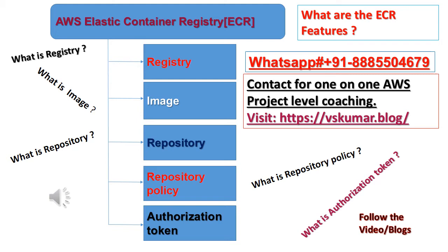Let us see what is AWS ECS from his lecture. Please look into the chart. What is Amazon Elastic Container Registry? 1. Amazon Elastic Container Registry, Amazon ECR, stores Docker Images, Open Container Initiative (OCI) Images, and OCI-compatible Artifacts and Repositories.